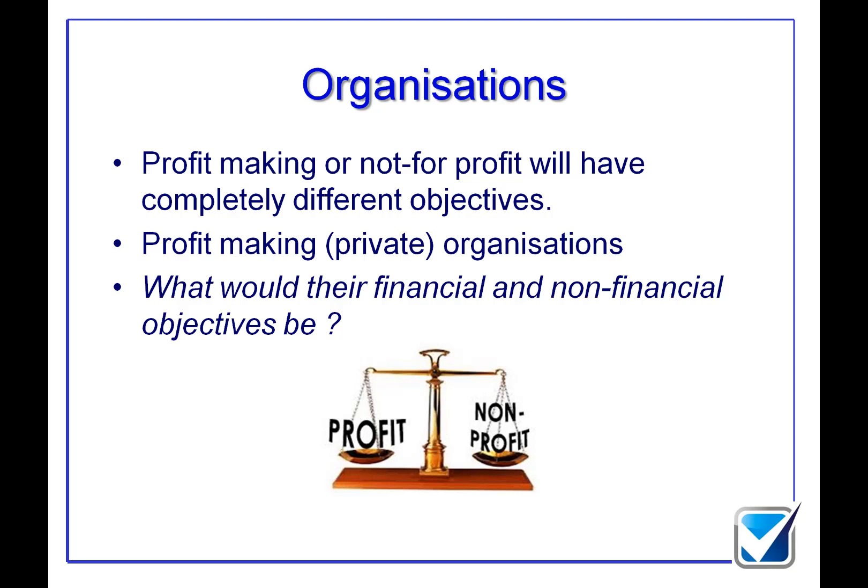Because they've got different stakeholder groups, they have different types of objectives. A profit-making organisation will have objectives including things such as increasing share price and paying dividends. A non-profit-making organisation's key objectives might be feeding people or providing water to different parts of the world. Those stakeholder requirements give my organisation the requirement to do certain things, and my organisation's objectives come about because of my stakeholders' objectives. These objectives can be split down into financial and non-financial objectives.